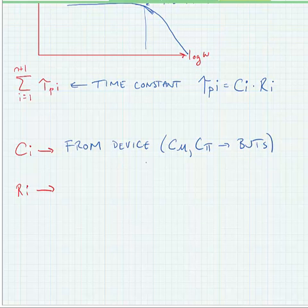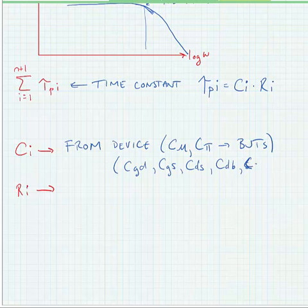There are things like CGD, CGS, CDS, CDB, and CSB for our MOS devices. So these are going to be small capacitors. Typical values are going to be tens of femtofarads to tens of picofarads.